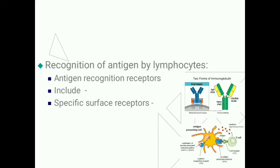The second step is recognition of antigen by lymphocyte. Lymphocytes have antigen recognition receptors, which are membrane-bound immunoglobulins in B lymphocytes — you can see in the diagram that B lymphocytes have immunoglobulins on their surface to recognize the antigen. For T cells, they have T cell surface receptors. Both T cell surface receptors and membrane-bound immunoglobulins have specific surface receptors and recognize and interact with only a single type of antigen, because the antigen has an antigen determinant site on its surface.